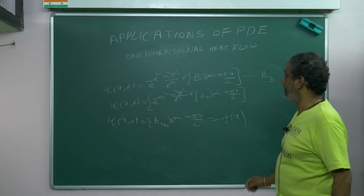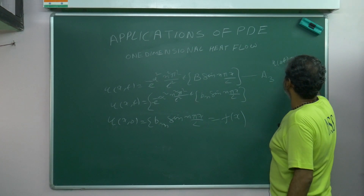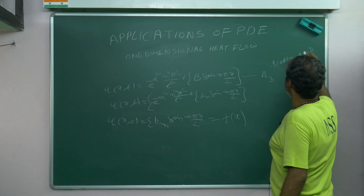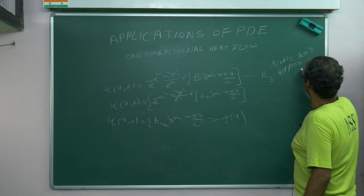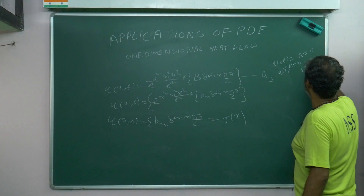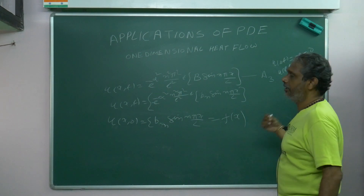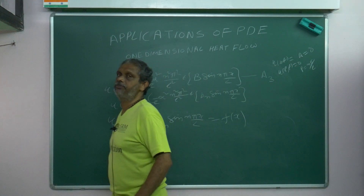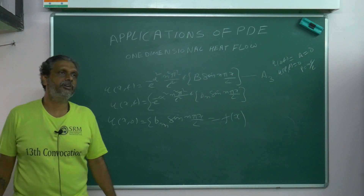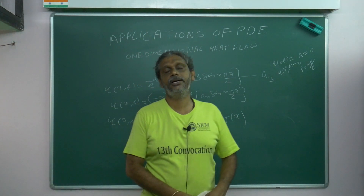To summarize: first condition u(0, t) = 0 gives A = 0; second condition u(L, t) = 0 gives p = nπ/L; third condition gives the half-range sine series. Remember this while doing the problem. I will explain again while doing the problem. Thank you for watching our channel. Kindly share and subscribe. Be part of our service. Bye.